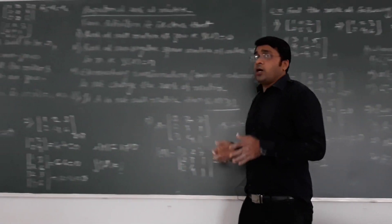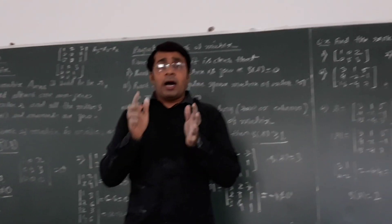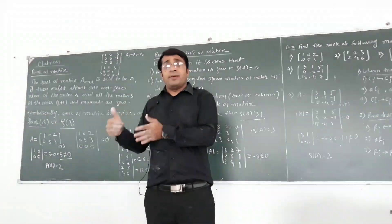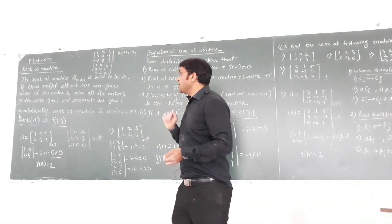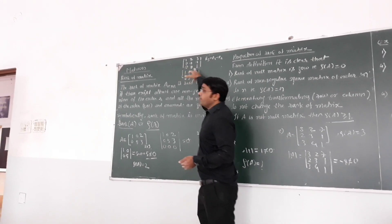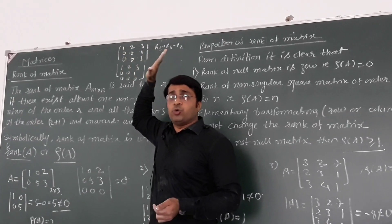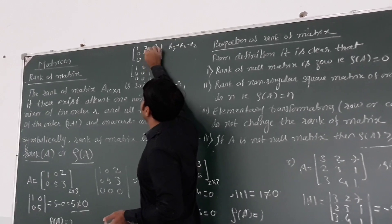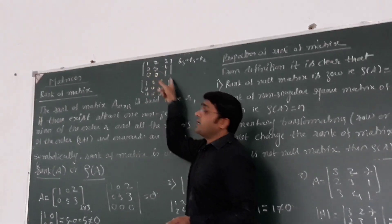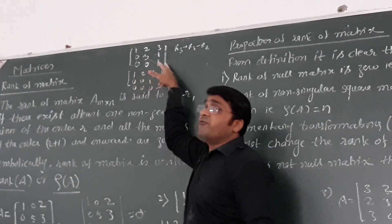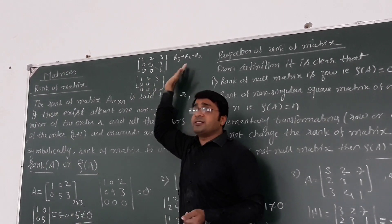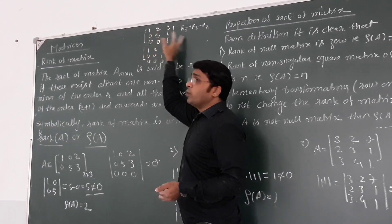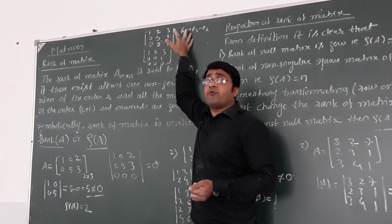We have a shortcut method: we convert a given matrix into an upper triangular matrix. Then the rank is decided by the number of non-zero rows in that upper triangular matrix. A zero row means all elements of that row are 0. For example, looking at this upper triangular matrix — elements below the principal diagonal are 0. The number of non-zero rows is 3, therefore the rank of this matrix is 3.